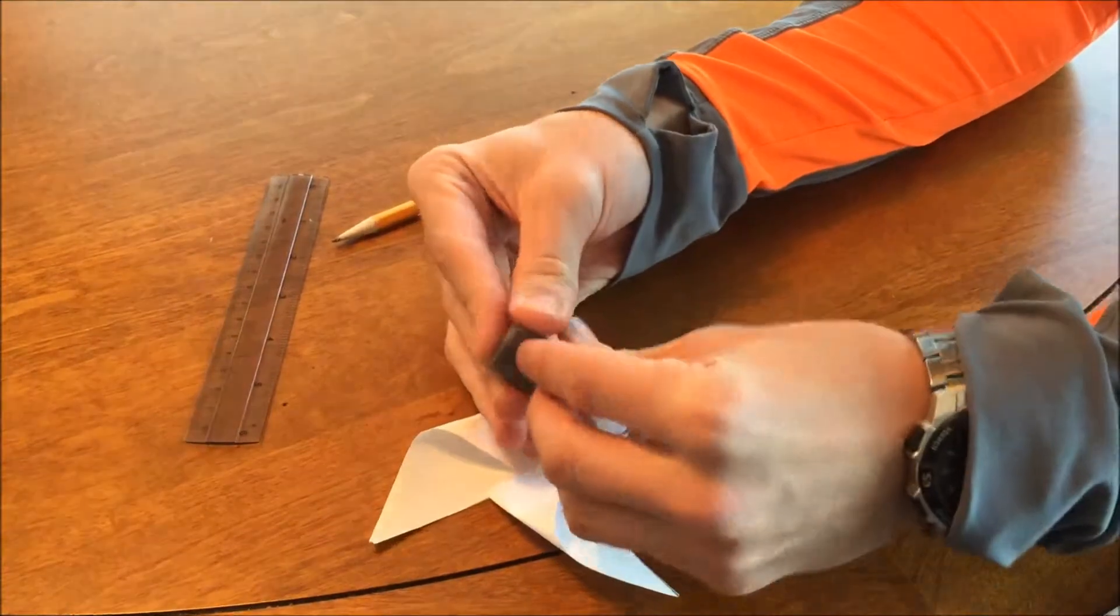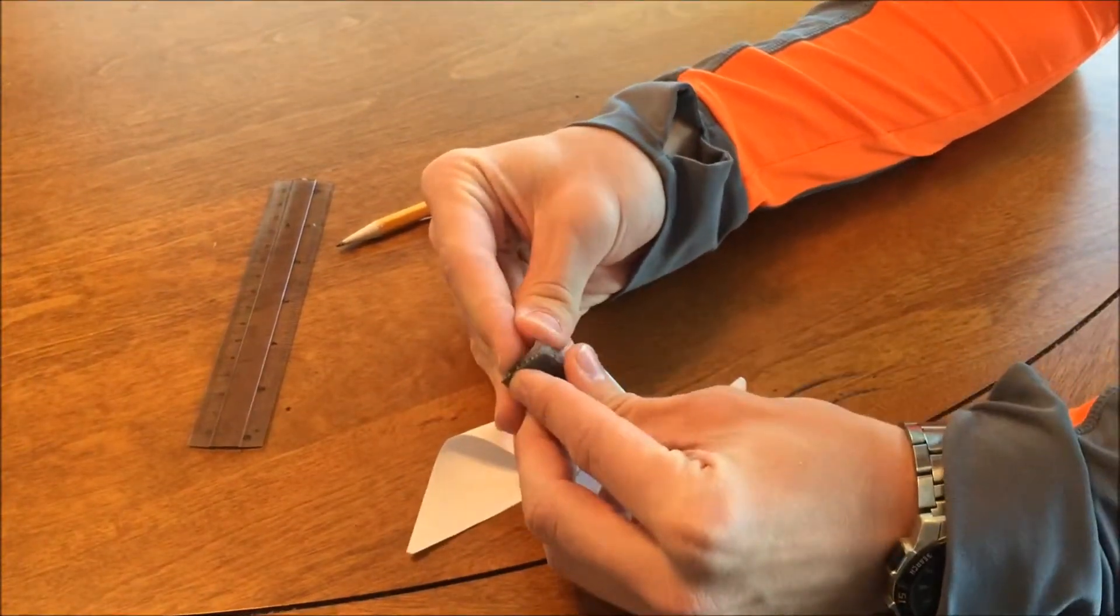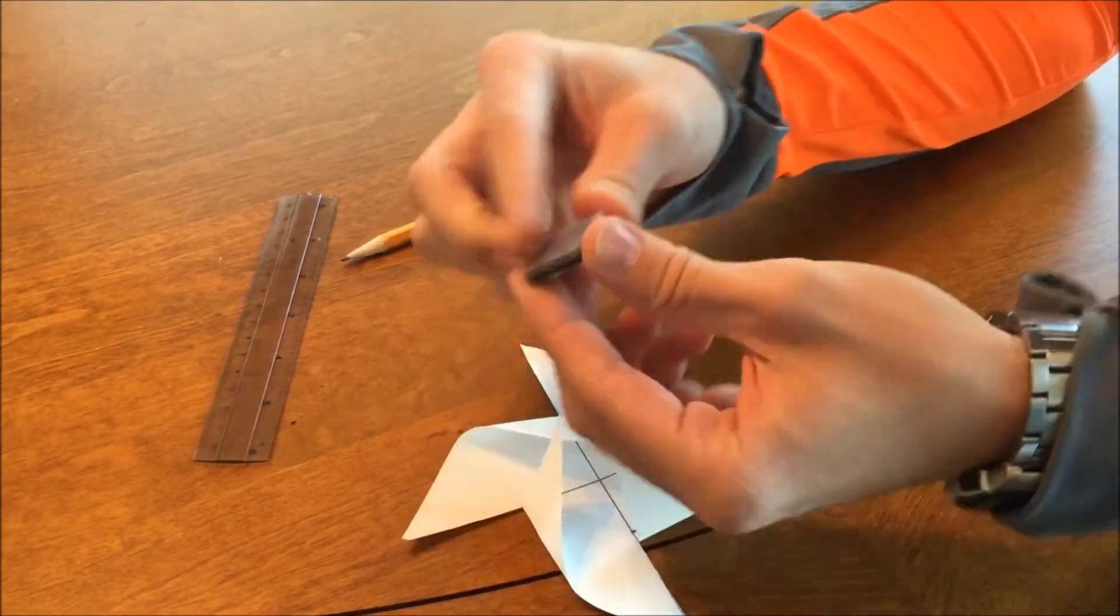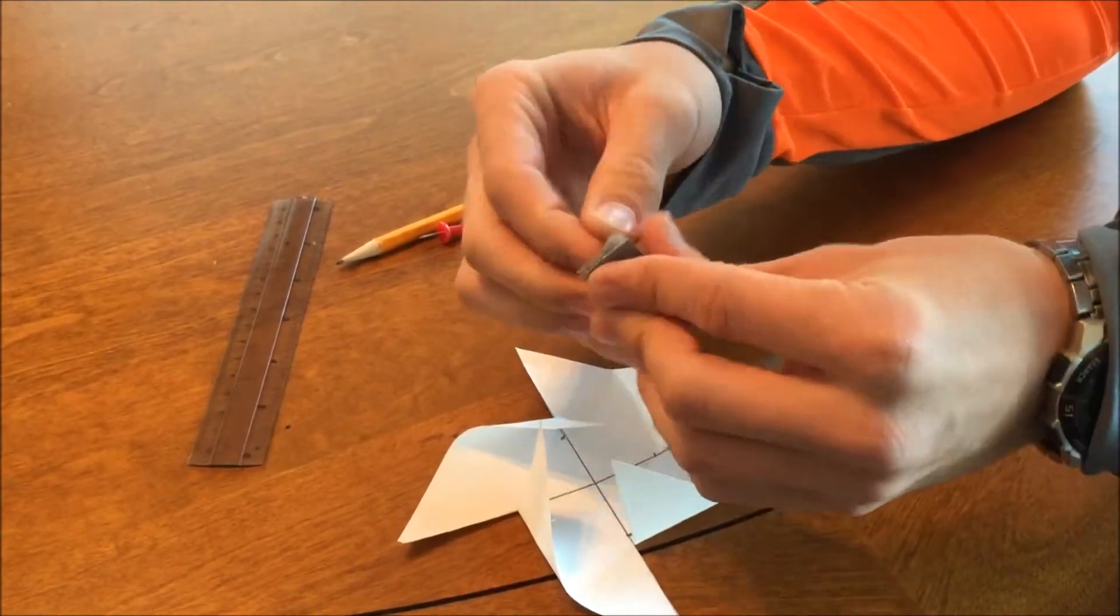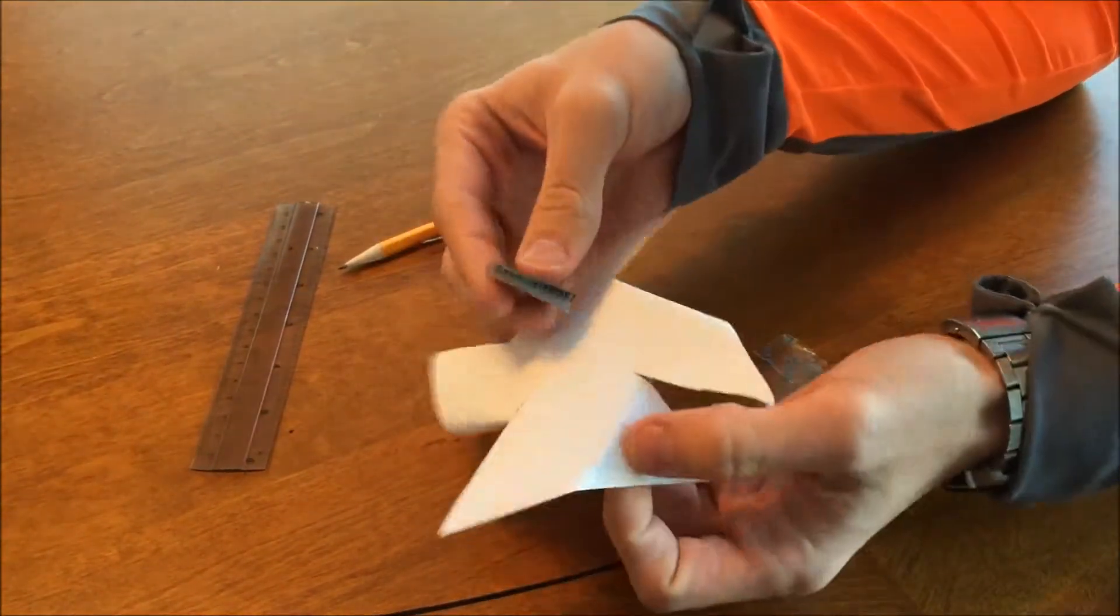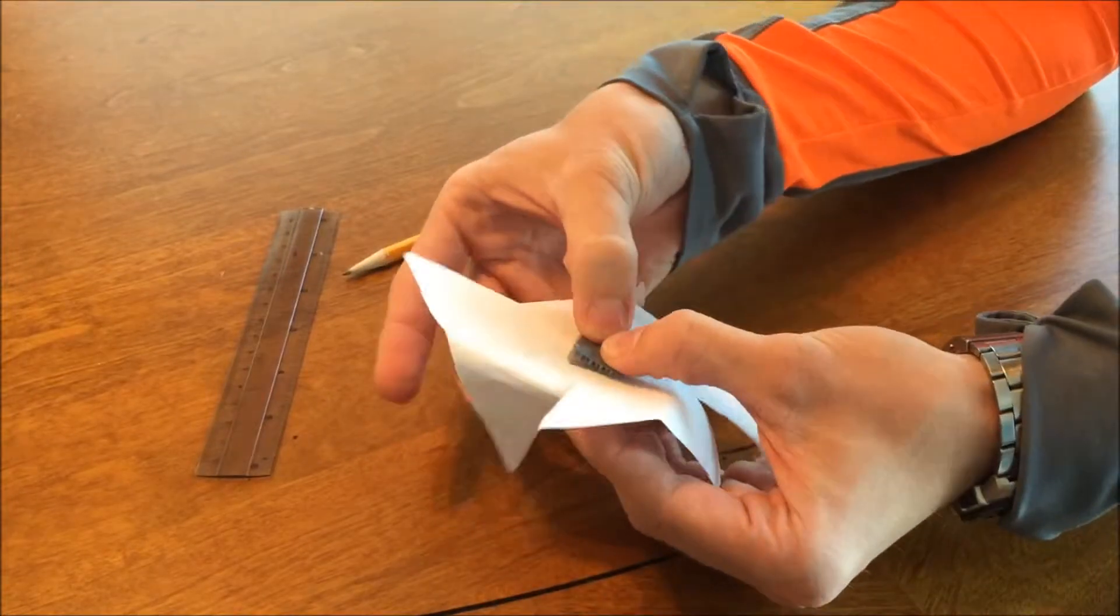Next, take your piece of velcro and peel off the backing of the adhesive. Place the velcro on the center of the back of the pinwheel.